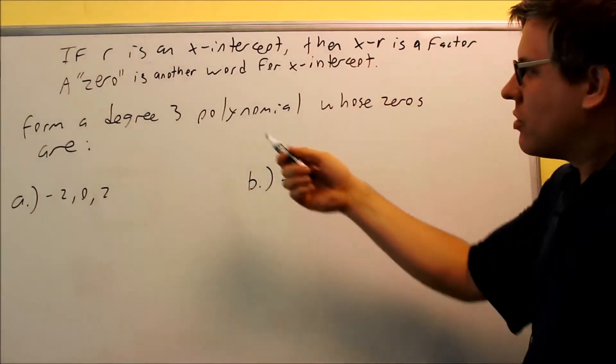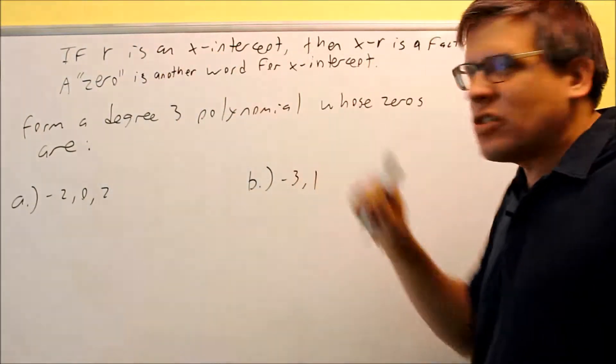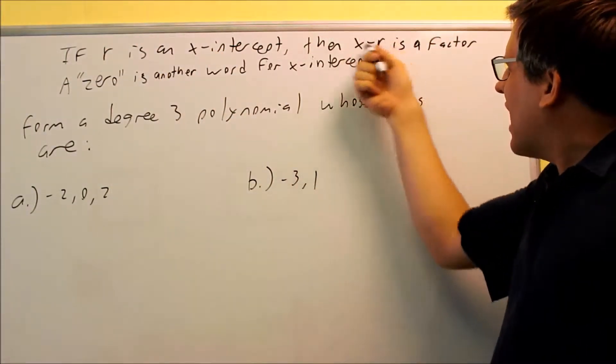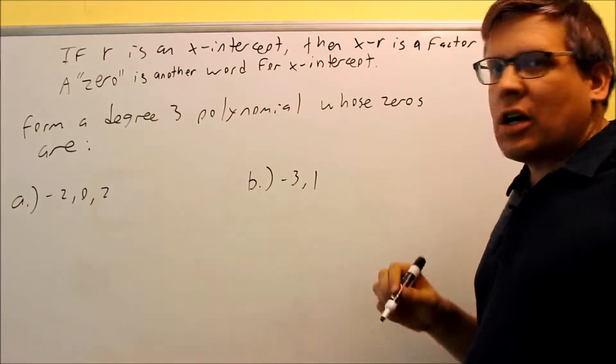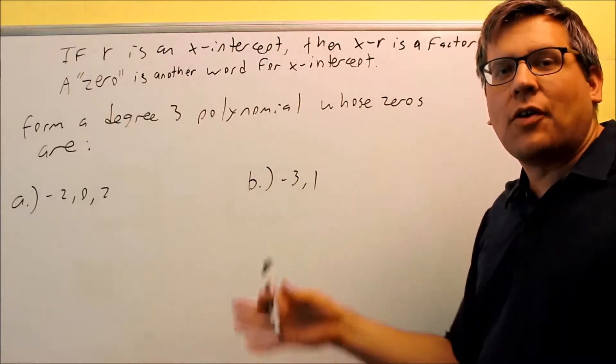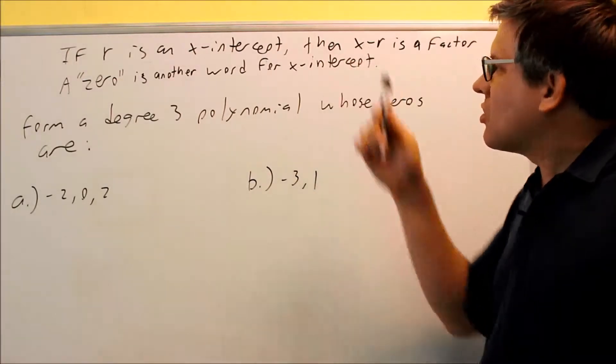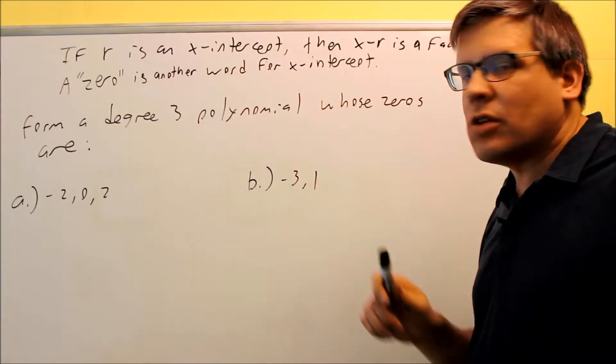Okay, so here's a couple definitions. If r is an x-intercept, then x minus r is a factor. In other words, we're talking about if we're given a bunch of x-intercepts and we want to find the polynomial that gave us those intercepts.